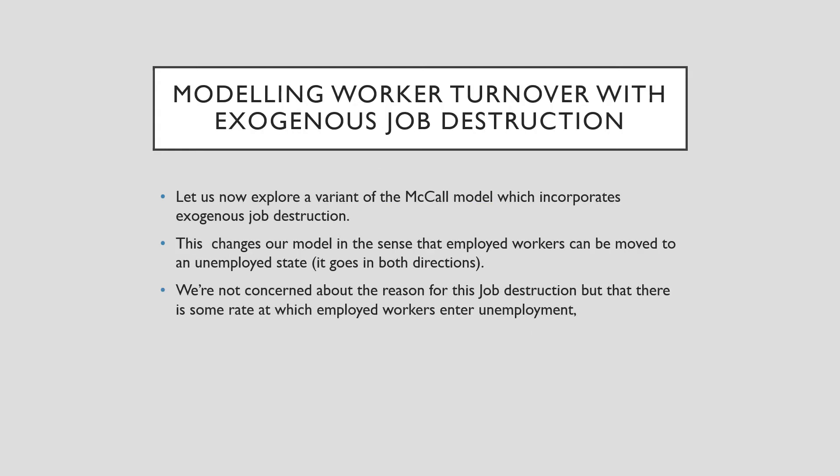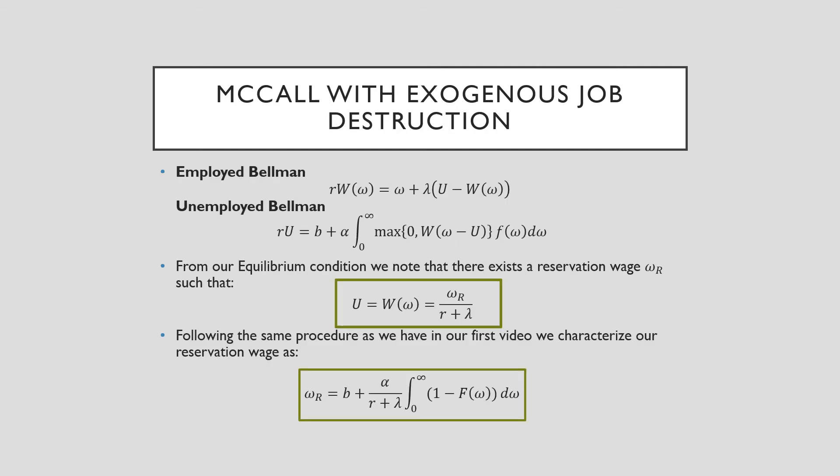Let's now explore a variant of McCall model which incorporates exogenous job destruction. This changes our model in the sense that employed workers can now move to an unemployed state. So it goes in both directions. Remember, our baseline model, we could not do this - workers can only move from unemployed to employed. And if they're employed, they stay there forever. But they couldn't move back to unemployed. Note also that we are not really concerned about the reason why the job was destroyed. Just that there's a rate at which employed workers enter unemployment.